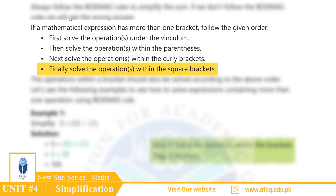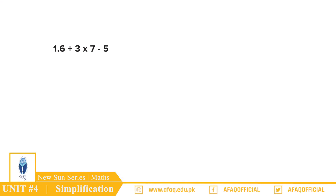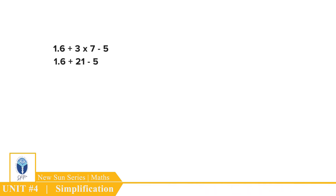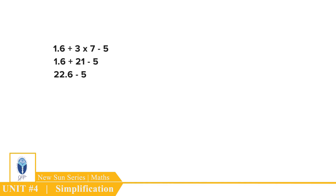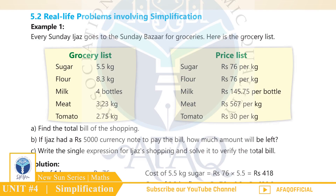BODMAS rule ko samajhne ke liye exercise se kuch sawal hal karte hain. Simplify the following: 1. 1.6 + 3 × 7 − 5. Is expression ke andar multiplication, addition aur subtraction hai, to BODMAS rule ke tahat sabse pehle multiplication hoga: 1.6 + 3 × 7 − 5 = 1.6 + 21 − 5 = 22.6 − 5 = 17.6. Yahi hamara jawab hai. Baki sawal aapne khud hal karne hain.